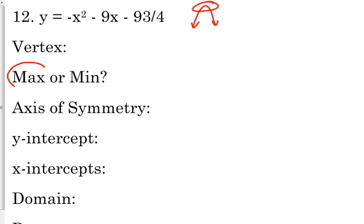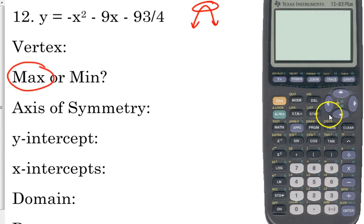So we've got a maximum point for our vertex. Go ahead and plug in that equation into your y equals negative x squared minus 9x minus 93 over 4.